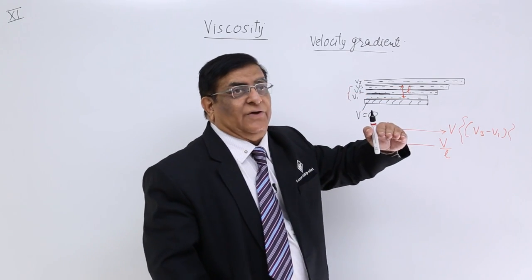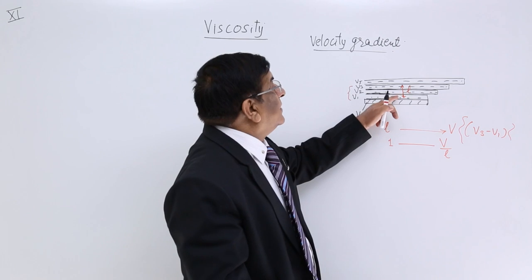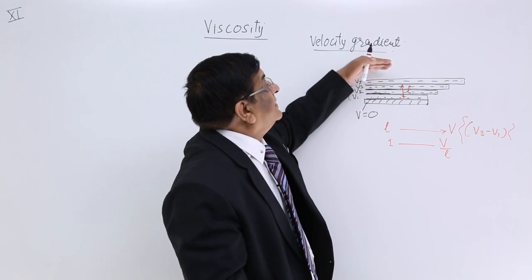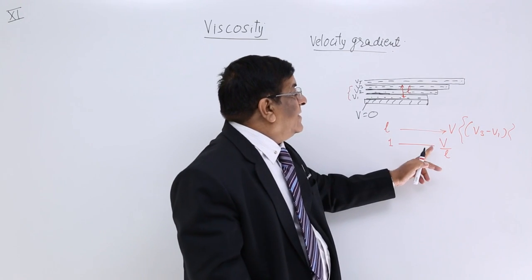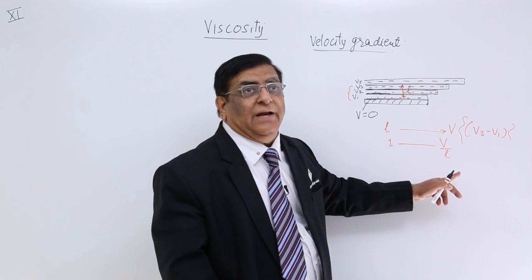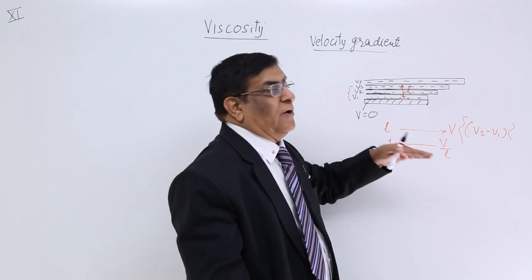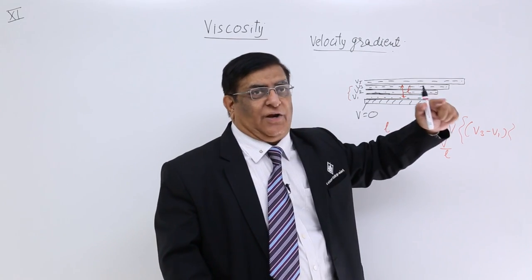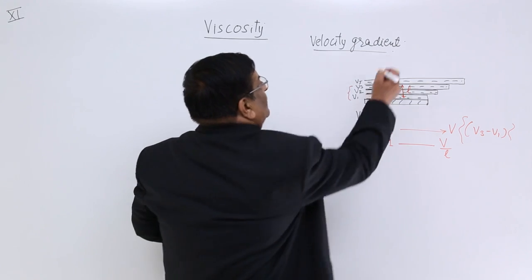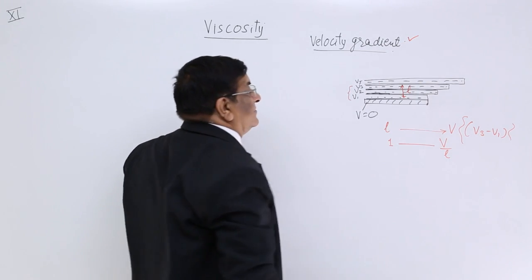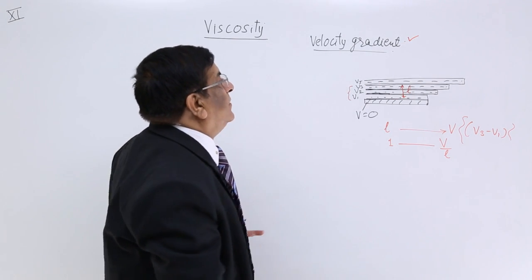This is increase in the velocity per unit height. If we go to the height 5 units, the velocity will increase by 5 into V upon L. So V upon L is the increase in velocity per unit height, and this is what we call velocity gradient.